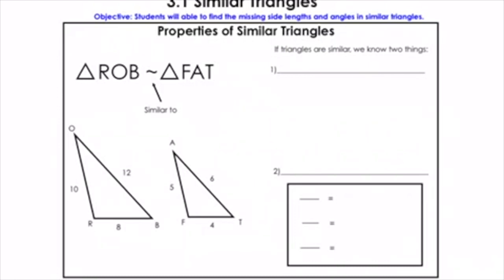There are two main properties that you need to know about similar triangles. These are the two big ones. The first one is this: if triangles are similar, corresponding angles are congruent. That is the first big property we know. In similar triangles, the corresponding angles are all congruent.